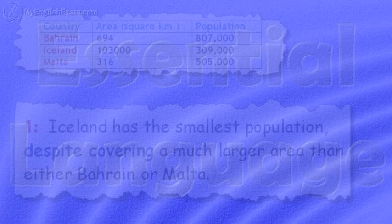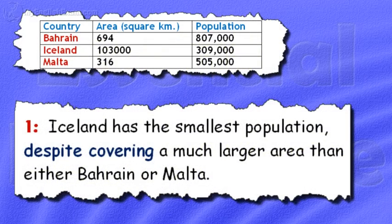Model 4. However, Iceland has the smallest population. Example 1: Iceland has the smallest population despite covering a much larger area than either of the other two countries.